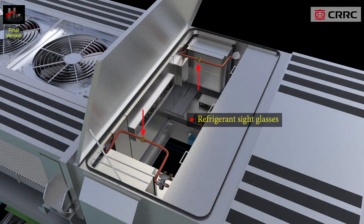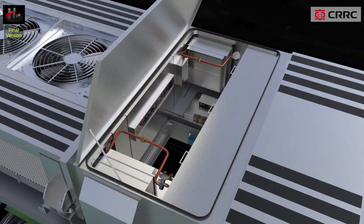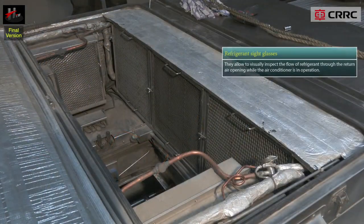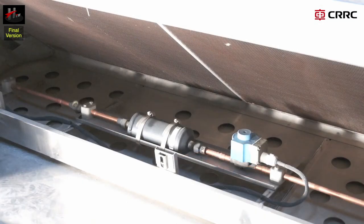The refrigerant sight glasses are installed above the fresh air dampers in the mixed air chamber. They allow visual inspection of the flow of refrigerant through the return air opening while the air conditioner is in operation. Refrigerant sight glasses are also installed in the condenser compartment under the condenser coils so that they can be viewed from the outside.